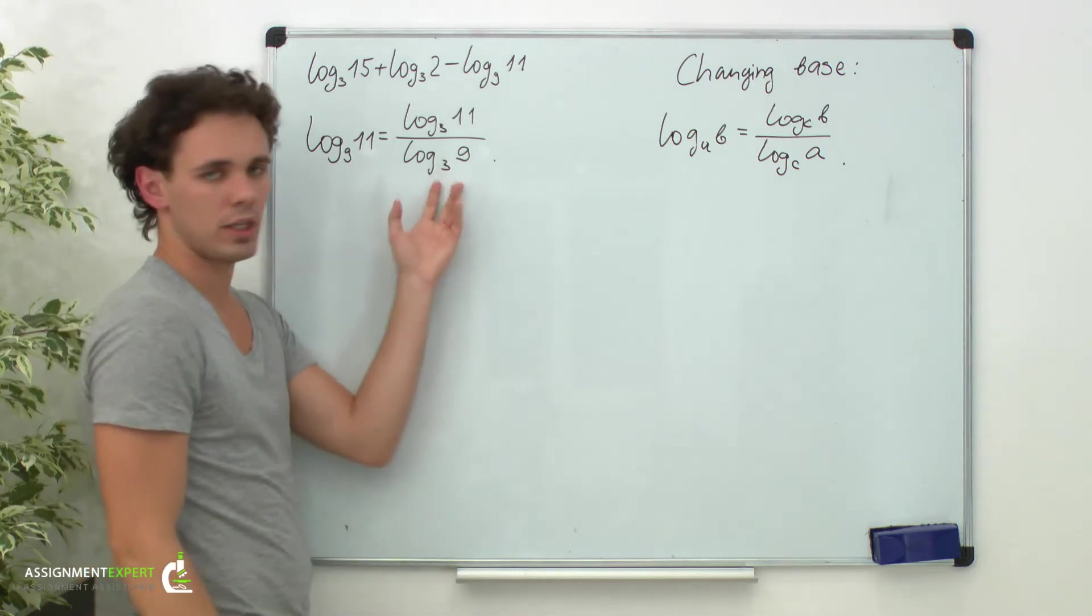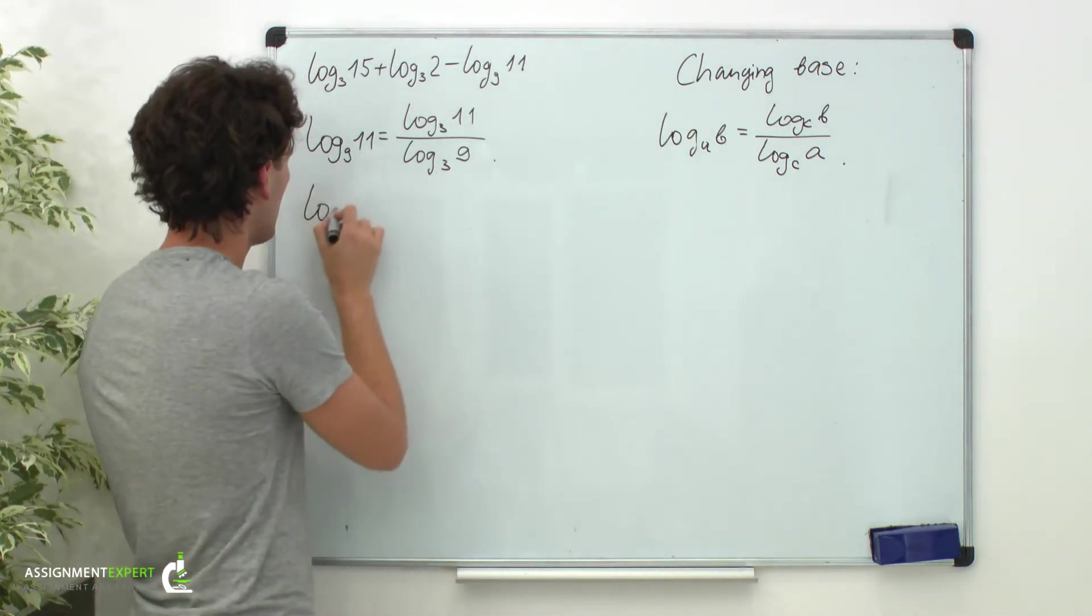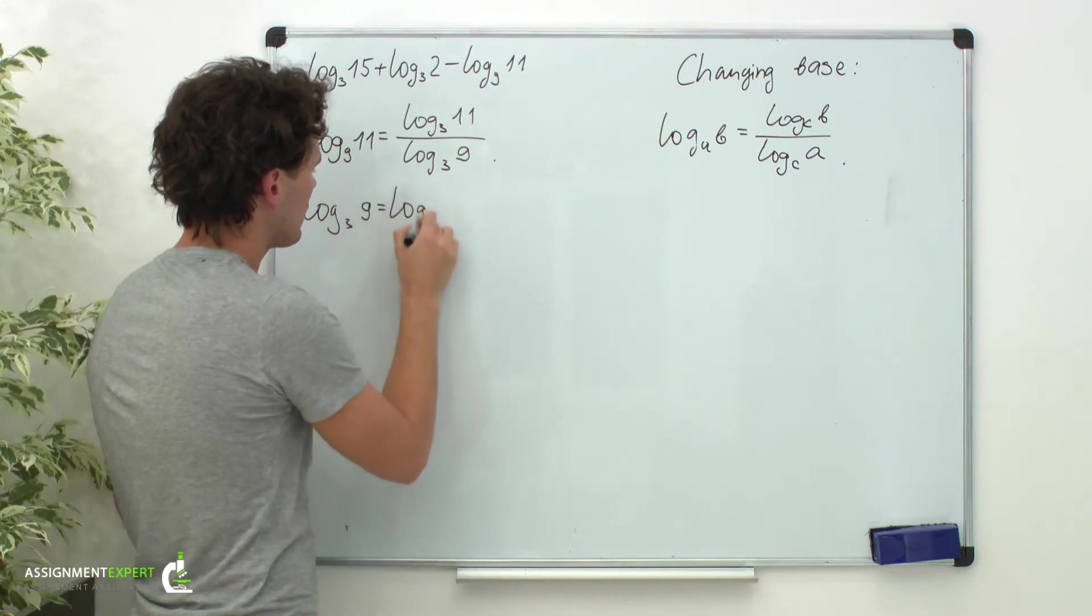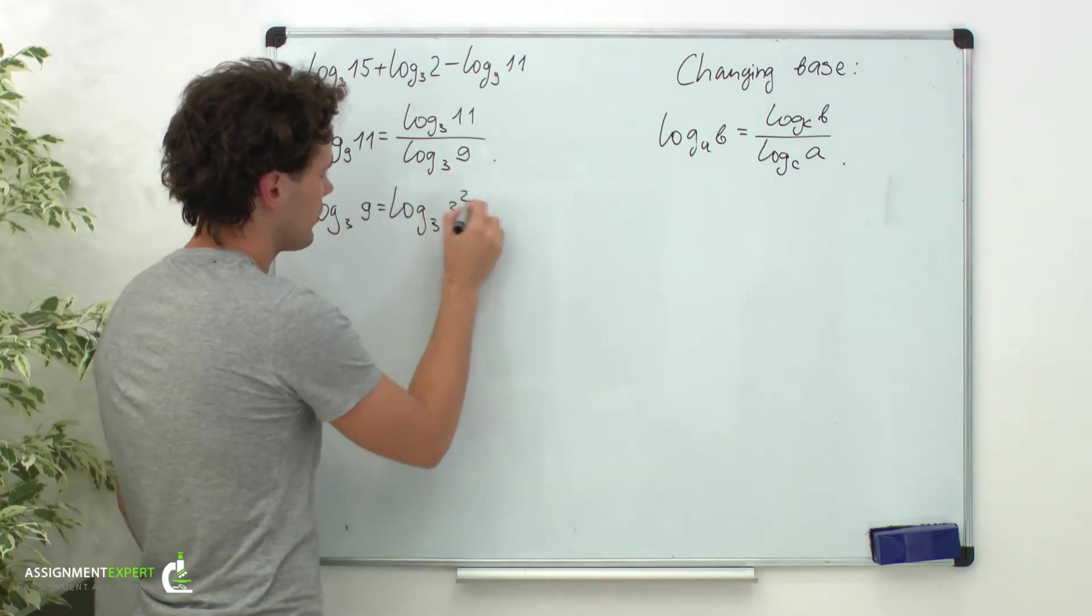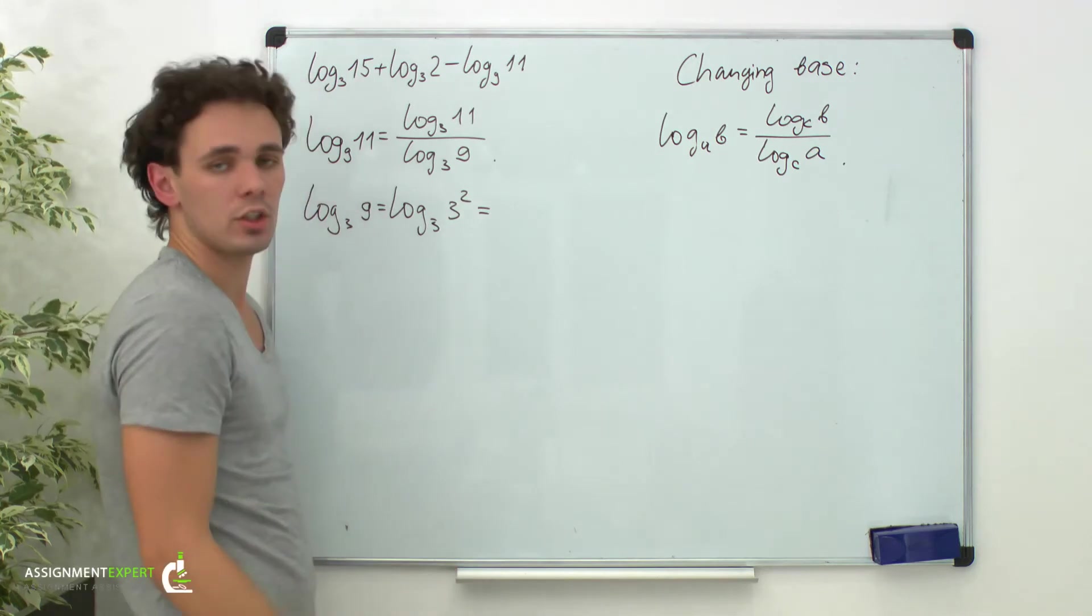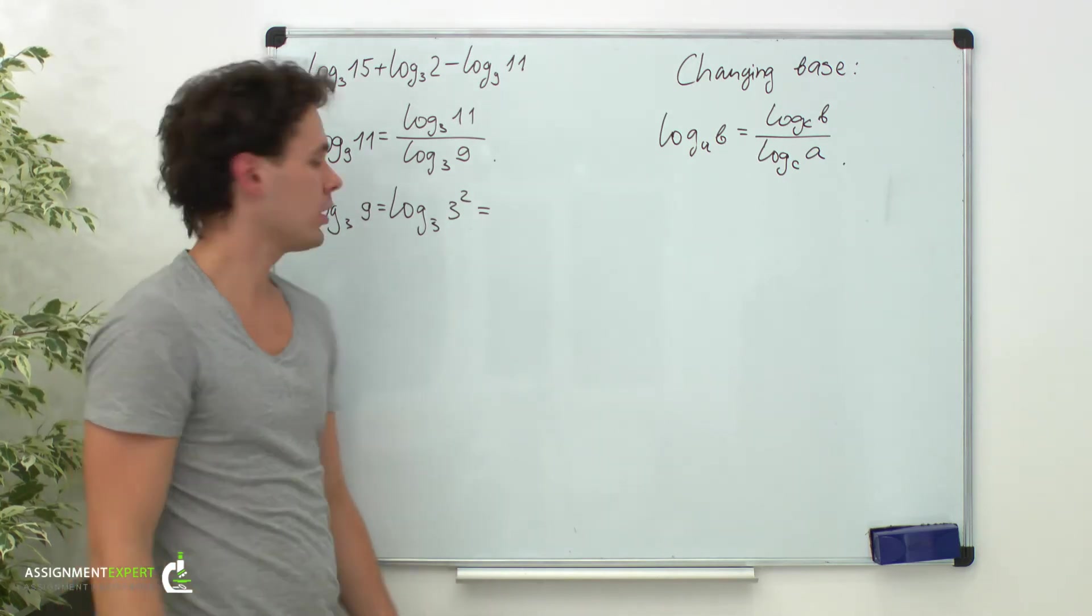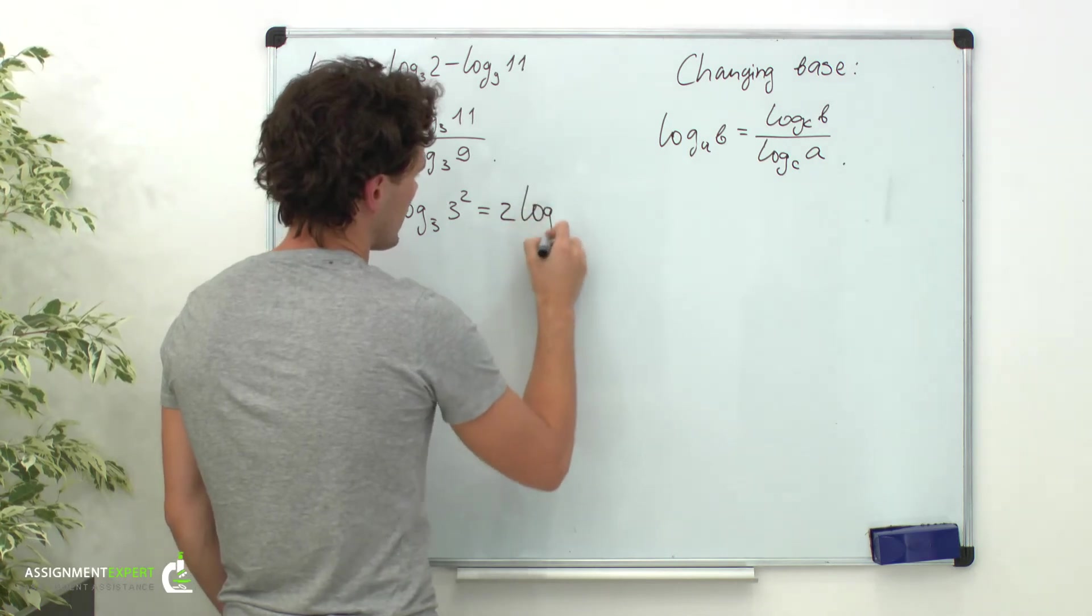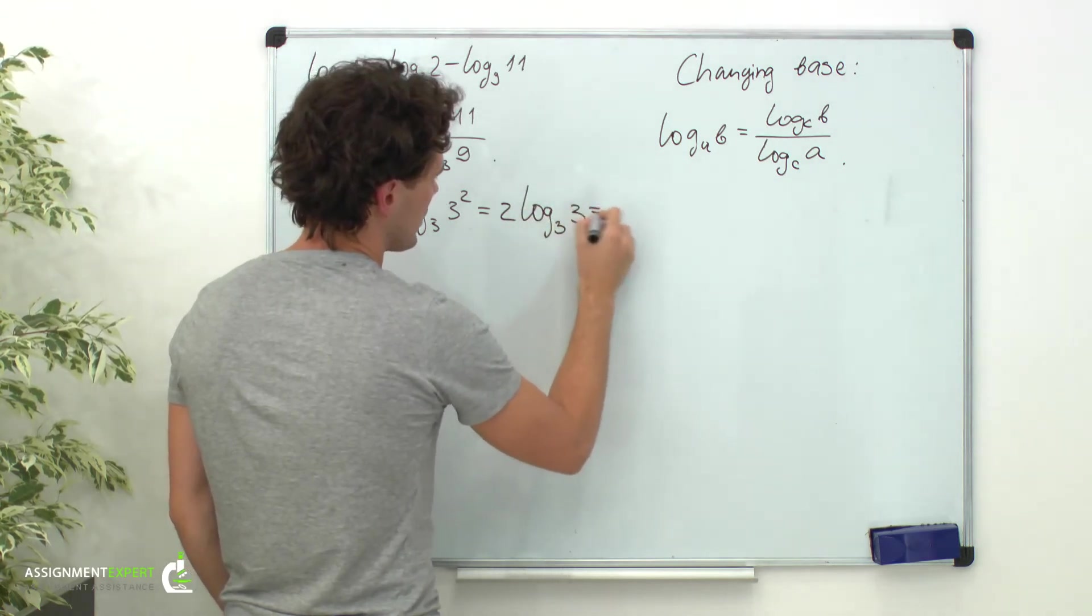Let's have a closer look at its denominator. Log base 3 of 9 equals log base 3 of 3 squared. We already know the power rule from last example. So applying this rule we get 2 times log base 3 of 3 and this equals 2.